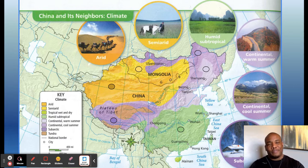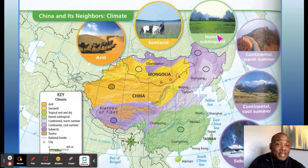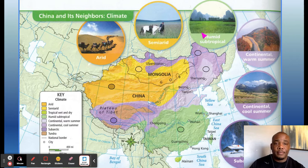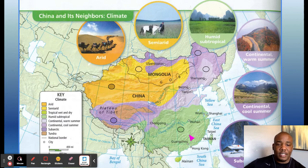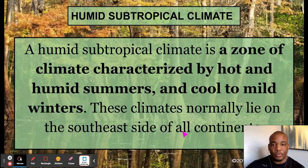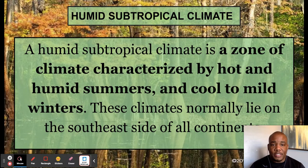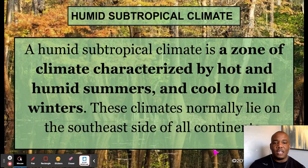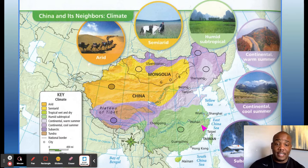When we see green on the climate map, that's humid subtropical — green usually means green. A humid subtropical climate is characterized by hot and humid summers and cool to mild winters. These climates normally lie on the southeast side of all continents. And looking at the map, this area is indeed south and east — humid subtropical on the southeast side.